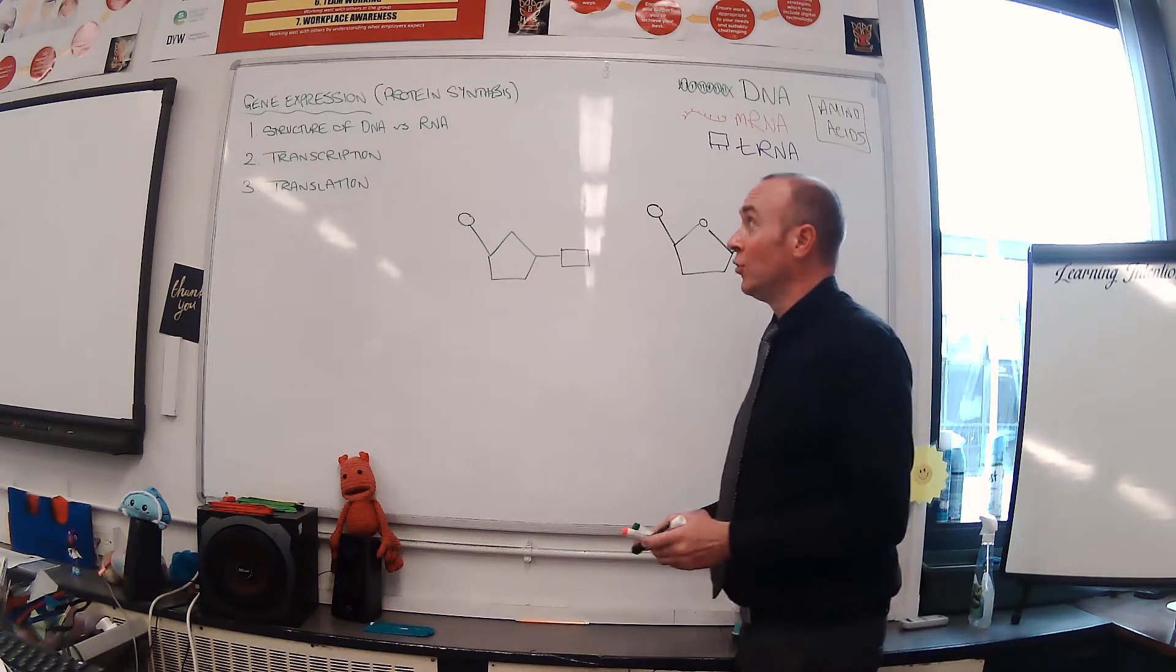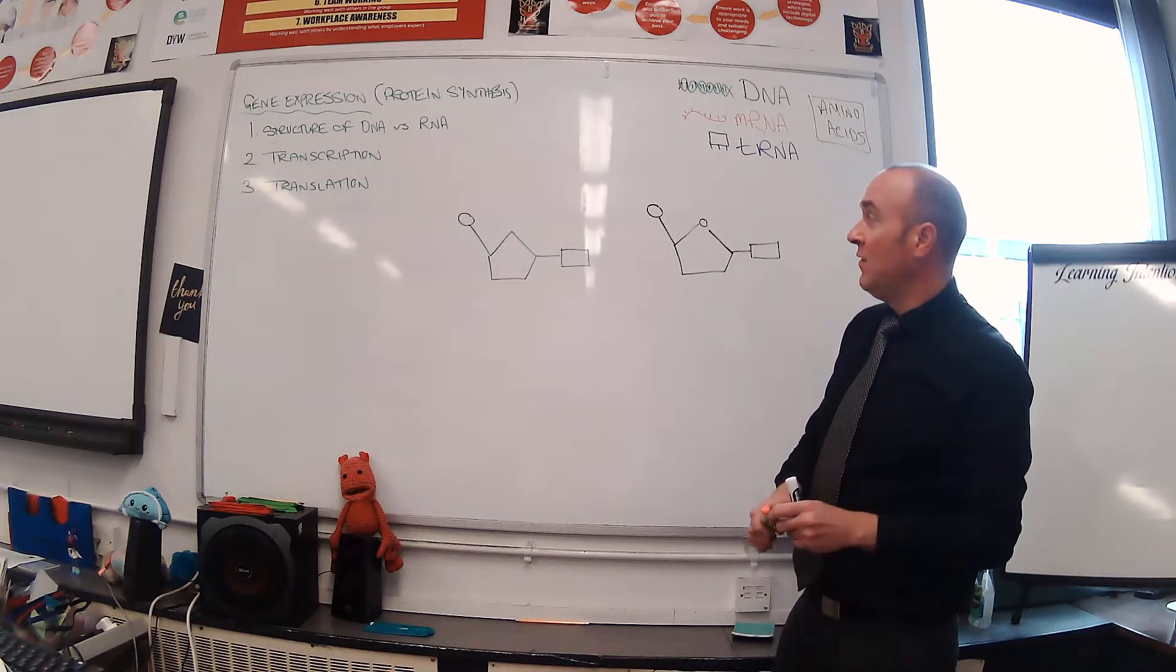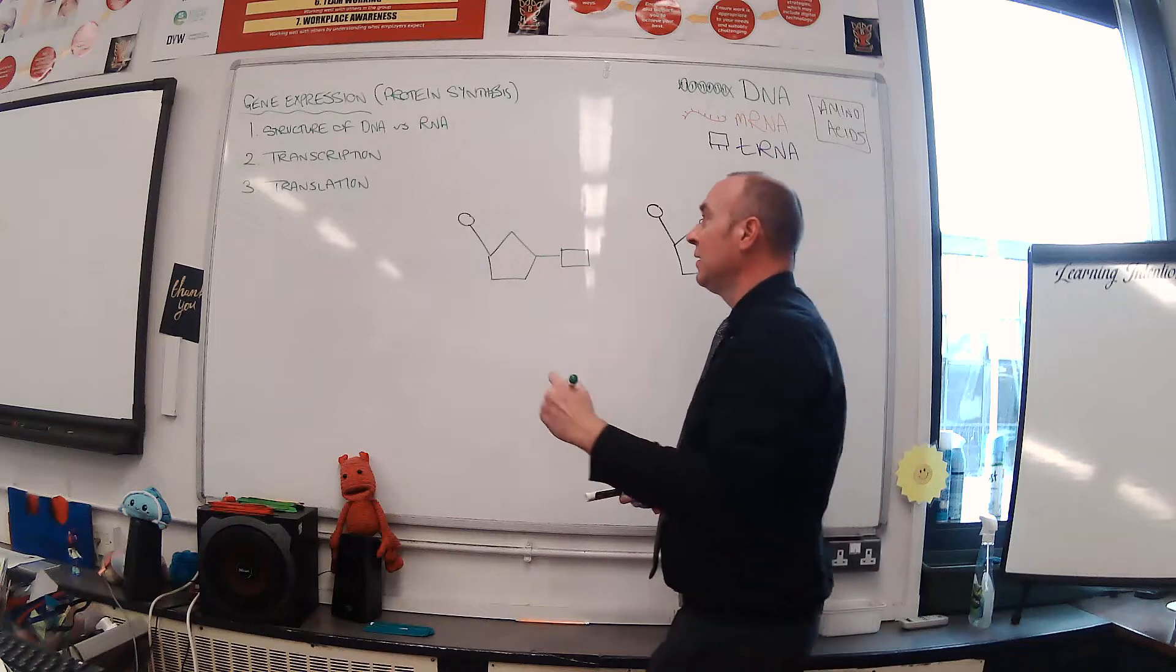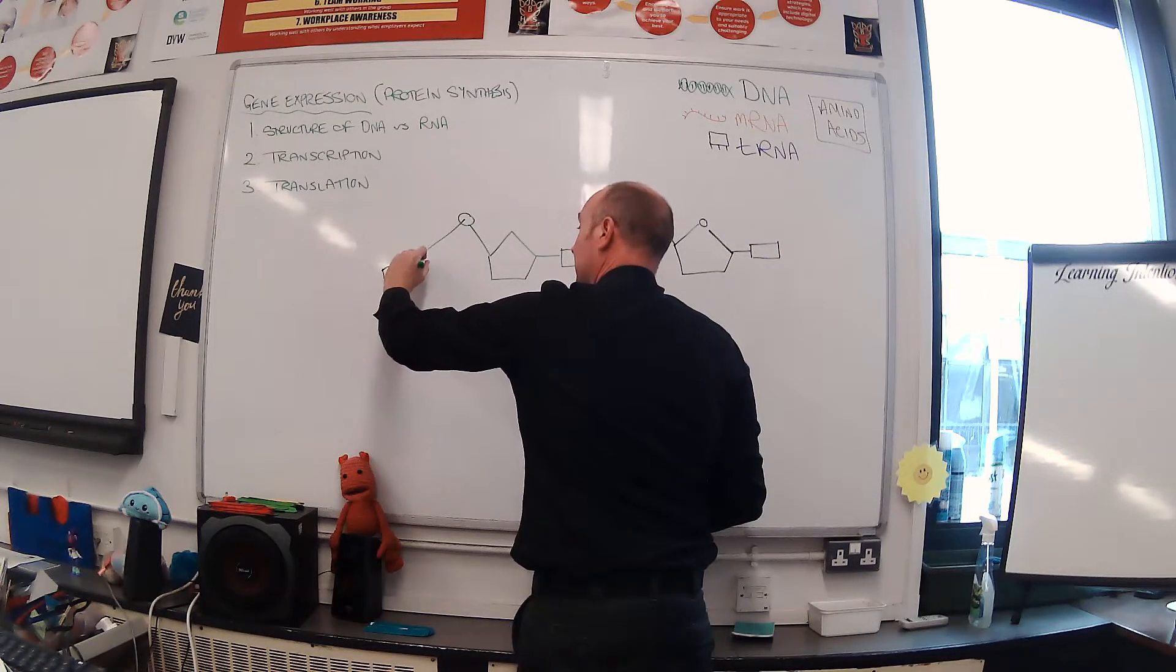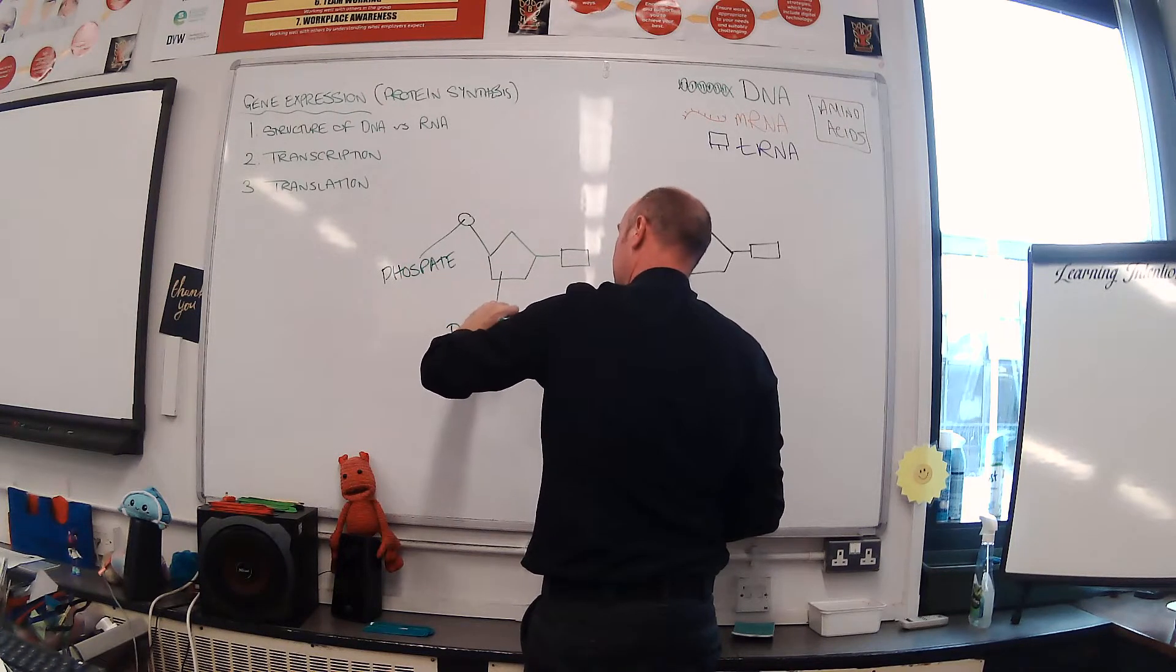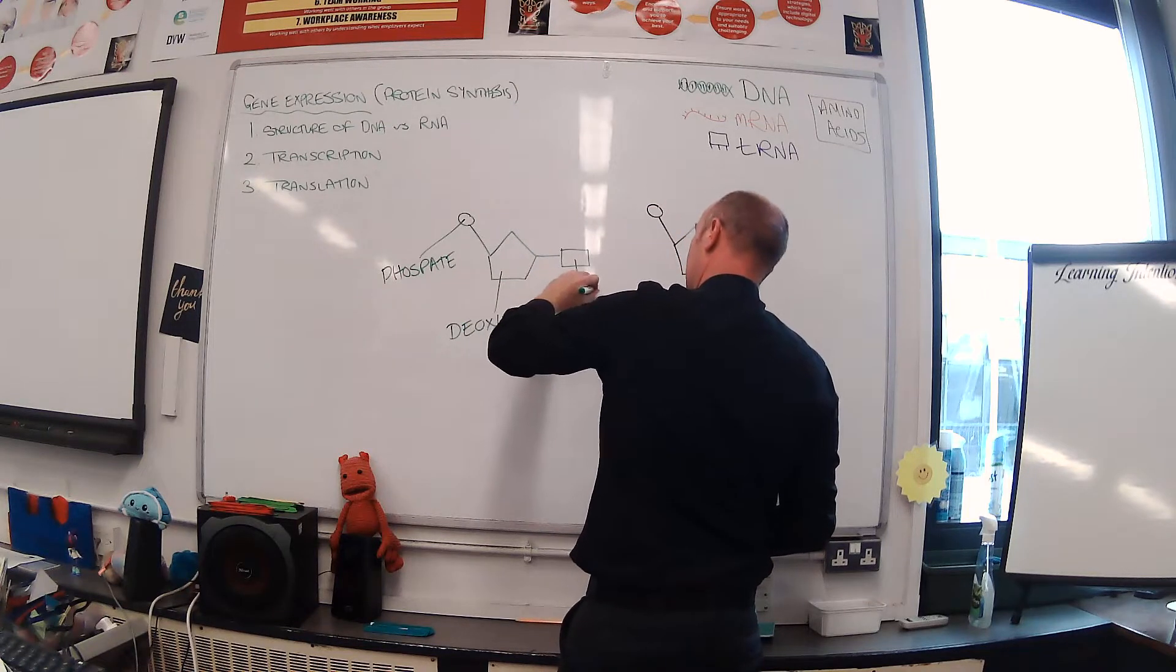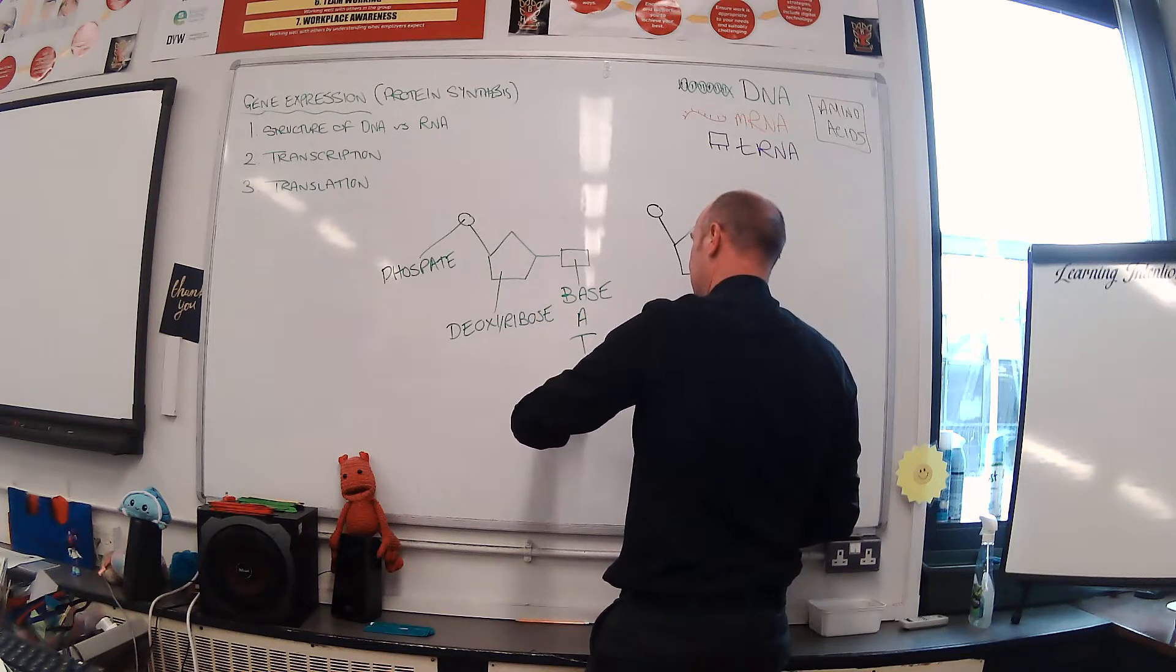What I've drawn here, hopefully you've recognized from the previous topic, that is a nucleotide. As a reminder, a DNA nucleotide consists of three parts: a phosphate attached to a deoxyribose sugar and a base, which is one of the four DNA bases: A, T, C, or G.